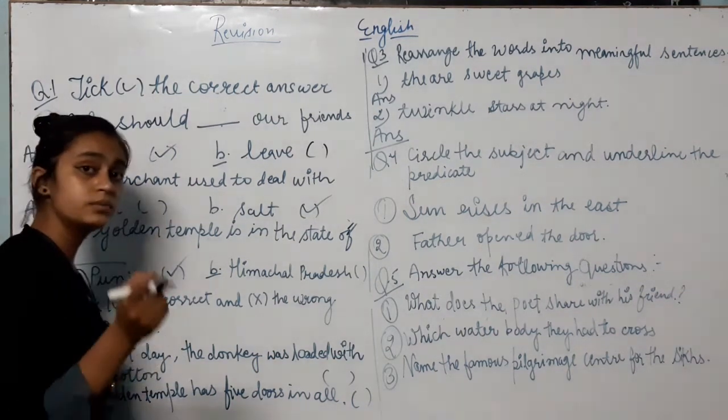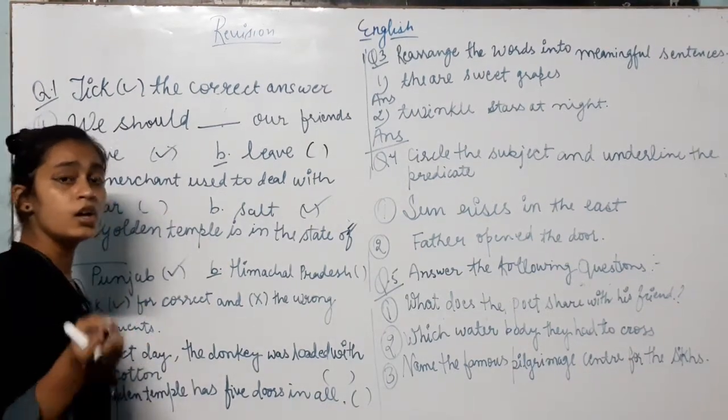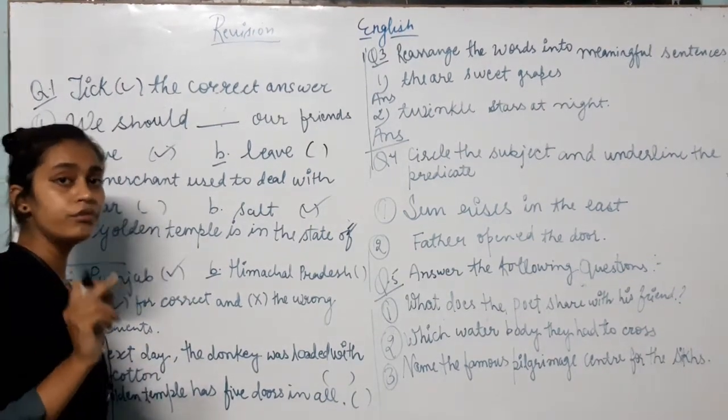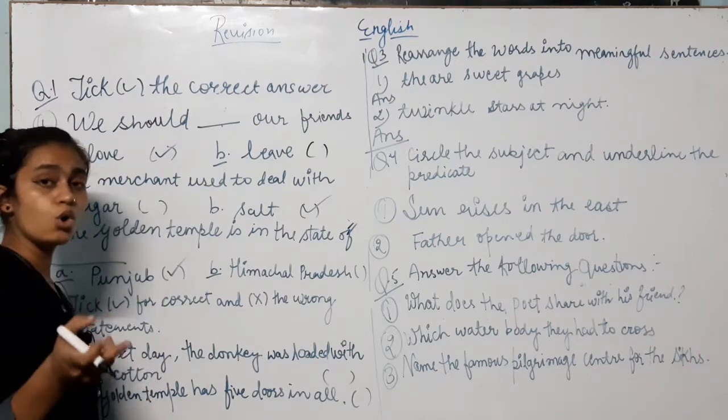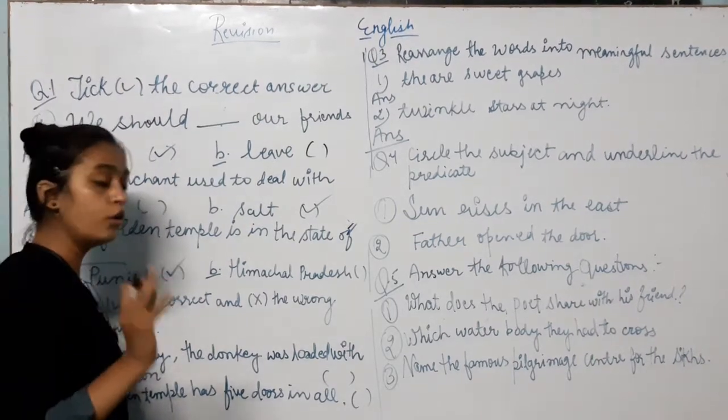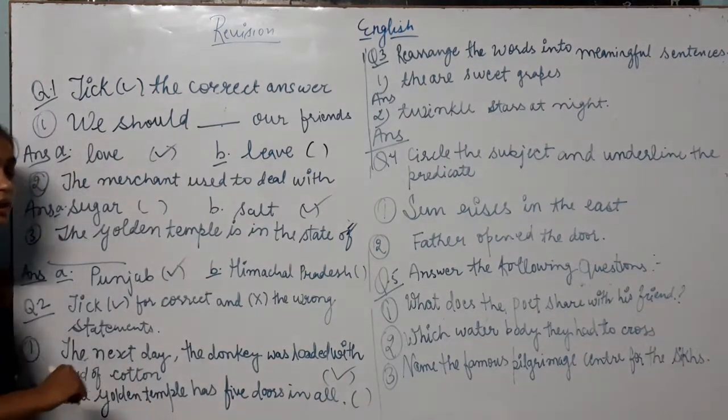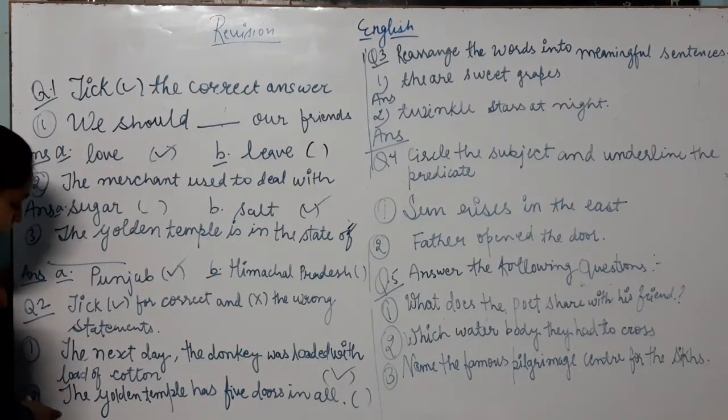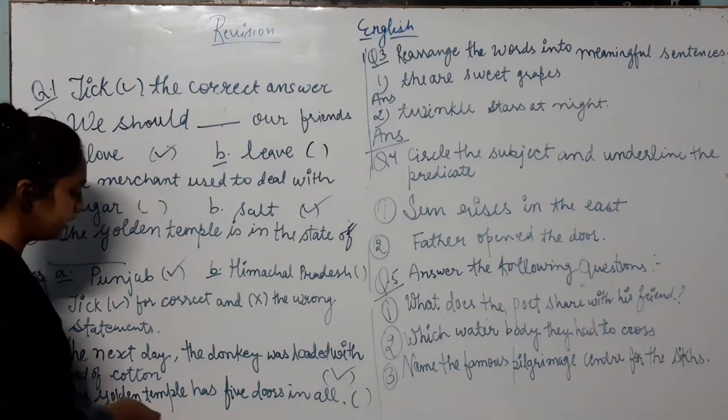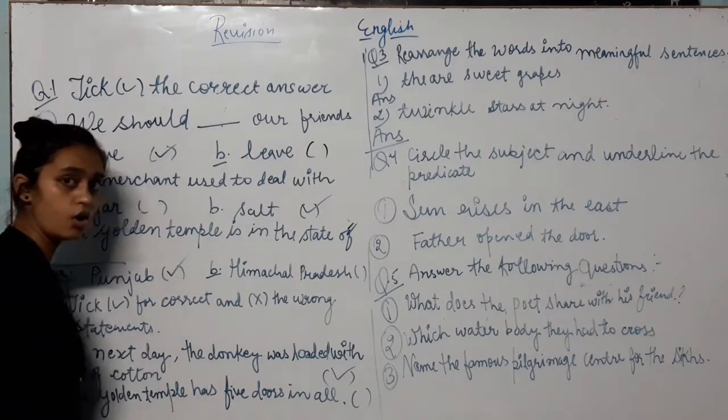Yes, because merchant knew about the trick of donkey. So he put a lot of cotton. Next day, the donkey was loaded with cotton. Second one, the golden temple has five doors in all. No, there are four doors in all.